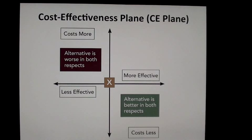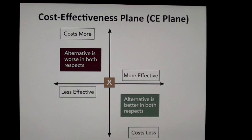If the spot marked X represents current standard of care, which might be representing do nothing, as we move along the horizontal axis to the right from the origin, that represents options which are more effective. And as we move up the axis, that represents more cost. So we have four quadrants: the north-west quadrant, the north-east quadrant, the south-east quadrant, and the south-west quadrant.